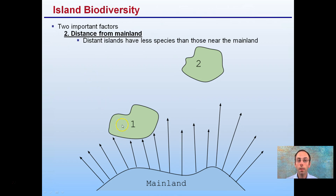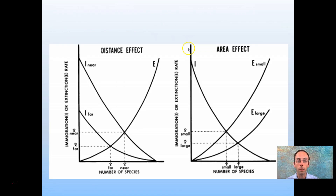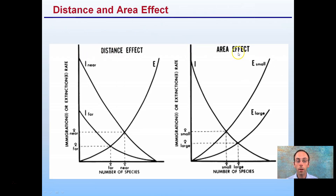Another factor is distance from the mainland. Here we have Island 1 and Island 2 about the same size, but Island 2 is much further away. Distant islands will have fewer species than those near the mainland, simply because organisms have a shorter distance to travel to nearby islands. Islands far away may require specialized skills to travel the greater distance, giving them fewer species overall.